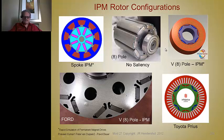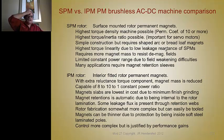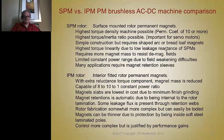Comparing IPM and SPM: the surface machine has the highest torque density possible with permeance coefficients of 10 or more — that is the ratio of magnet thickness to air gap thickness. It has the highest torque-to-inertia ratio of any known machine, which is important for servo motors. Simple construction, but requires shaped arc or bread loaf magnets. Highest torque linearity due to low leakage reactance. Requires more magnet mass to resist demagnetizing fields. Limited constant power range due to field weakening difficulties. Many applications require retention sleeves.